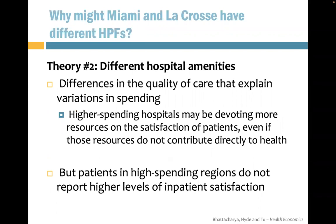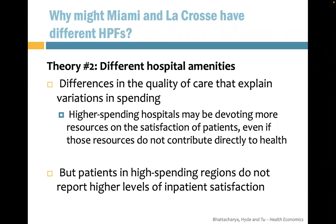Theory two is different hospital amenities. Higher-spending hospitals may devote more resources to patient satisfaction — better beds, better rooms — even if those resources don't directly contribute to health outcomes. However, after collecting surveys, researchers found no higher level of inpatient satisfaction in high-spending regions. So theory two doesn't appear to explain the biggest differences in healthcare spending.